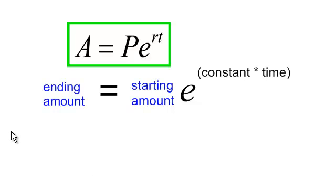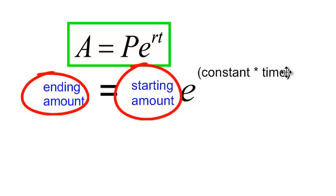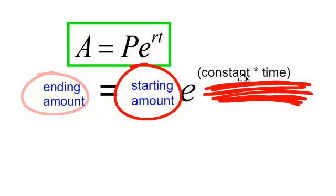But this has basically the same foundation as our PERT formula. So, the ending amount is equal to how much you're starting with times E to some constant or rate times the time.